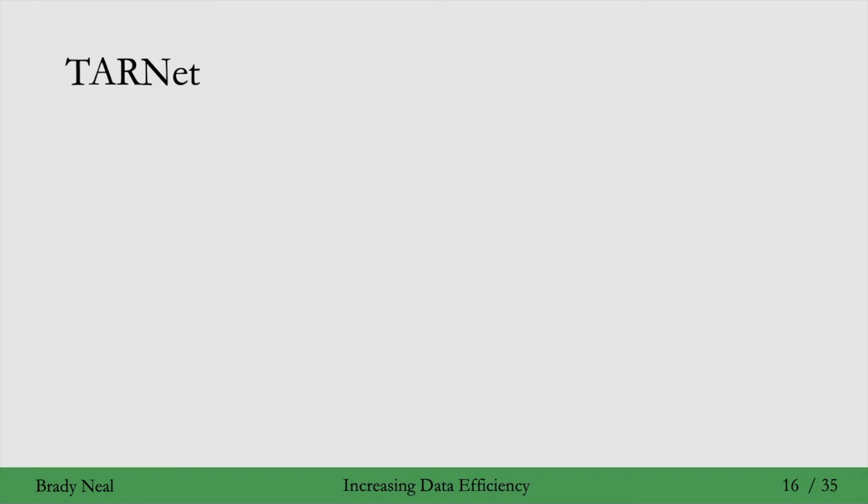The first is TARNET. Here's what the model for a COM estimator would look like. We're going to use neural networks again here, and this network takes both T and W as input.